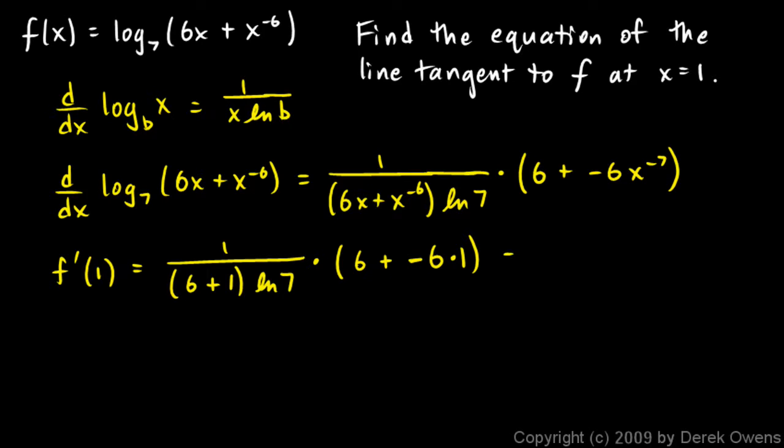So this you can see works out to 0. 6 plus negative 6 is 0. So I end up with 0 over what I have here, which is 7 ln 7. And that's clearly going to be 0, because we have a 0 numerator. So at x equals 1, the slope of this function, the slope, our derivative, of our original function is 0.